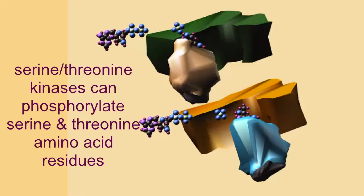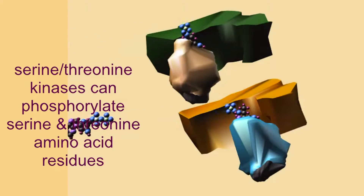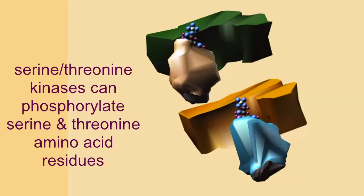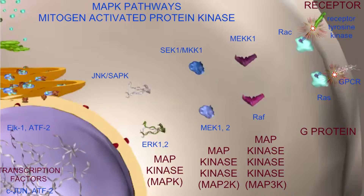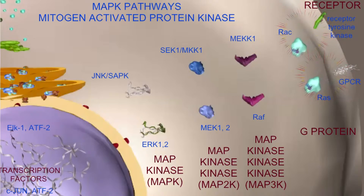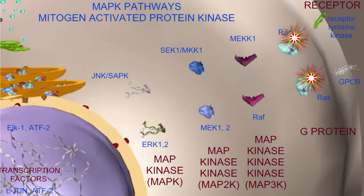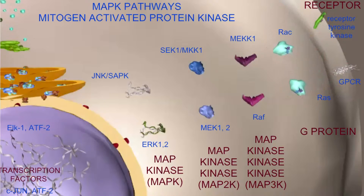Which then activates a third serine-threonine kinase, and so on. There are some very important cascades known as the MAP kinase cascades, or the mitogen-activated protein kinase cascades.